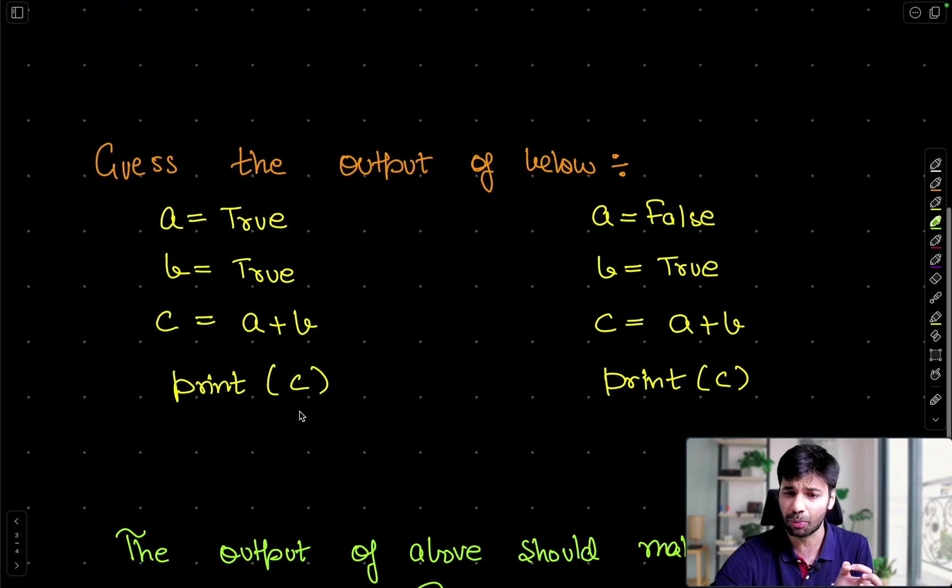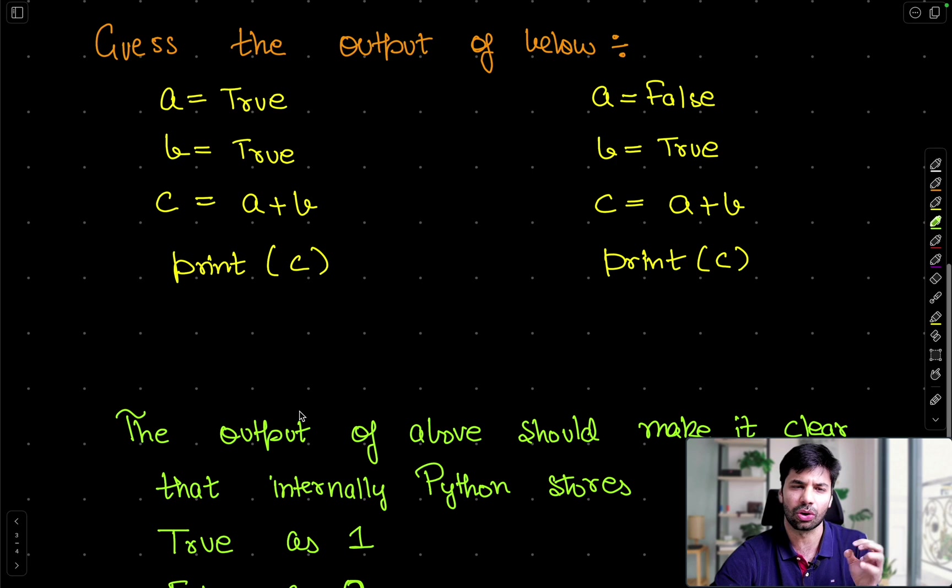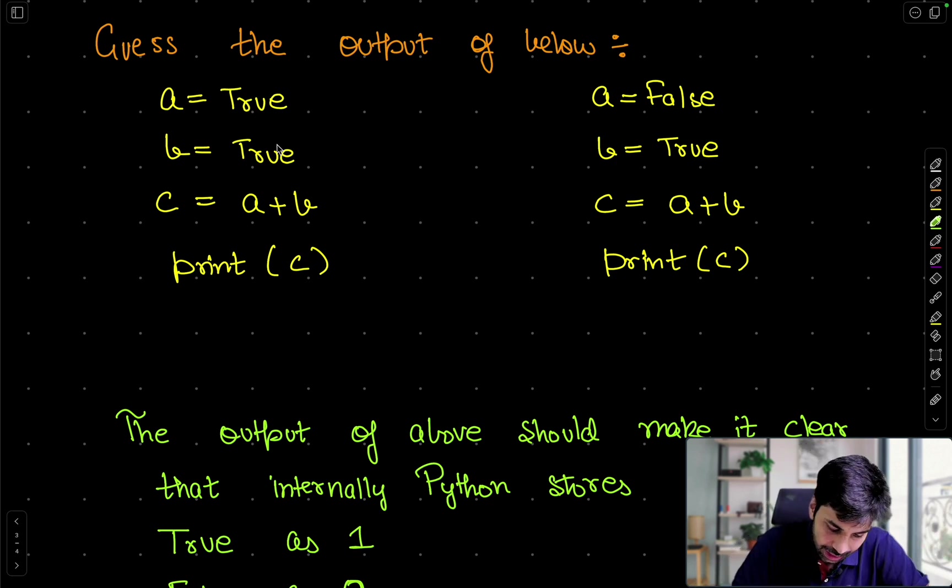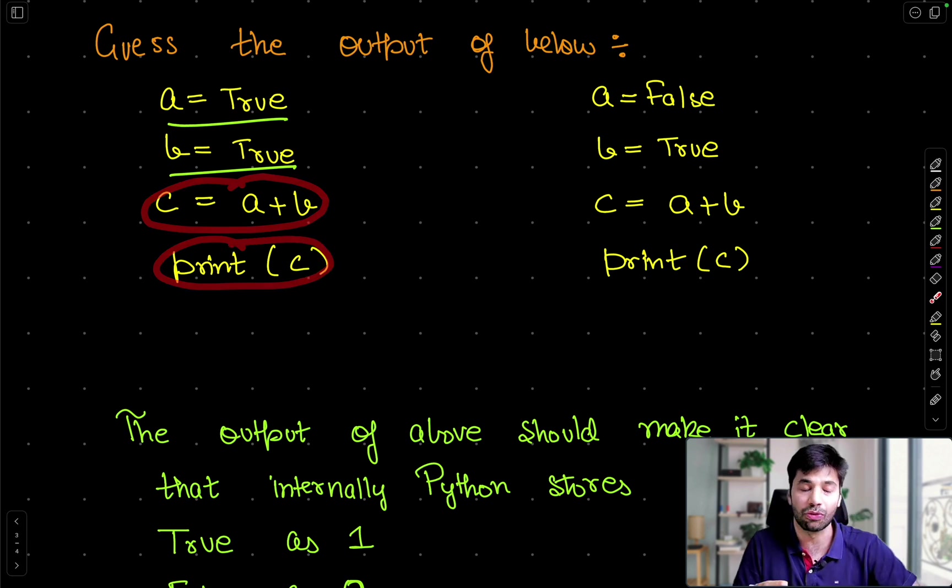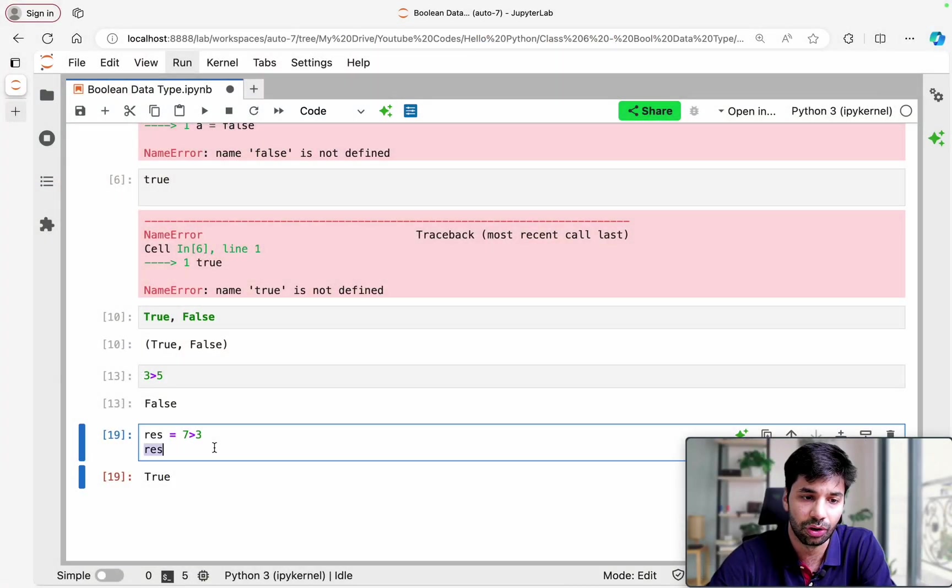That is all majorly about Boolean data type. Now there is just one very important thing which I want to make sure that you understand. The reason for that is it is something which not a lot of people are aware of, and it is actually used when you are writing code. So if we guess the output of this particular code: A equals true, B equals true. When I am doing C equals A plus B and I print C, can you guess what will be the answer? Can you guess what will be the answer? Just pause the video and guess the answer. Let me write the same for you all.